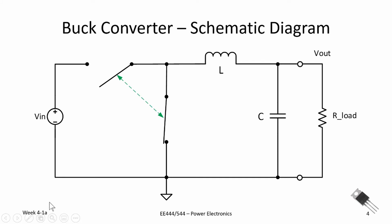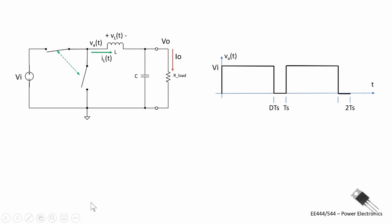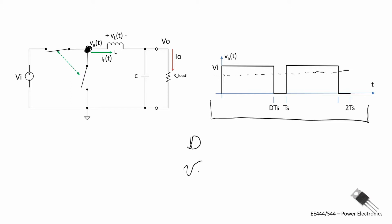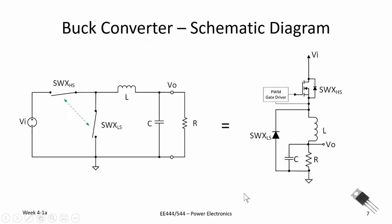Here's the high-level schematic of the buck converter. It consists of a high-side switch and a low-side switch that act in tandem, connecting the inductor to the DC input voltage V_in. This really is acting like a DC chopper. If we plot the node voltage V_A as a function of time, we see it provides a chopped DC signal with an average output proportional to the duty cycle D, so the average value of V_A equals D times the input voltage V_in.